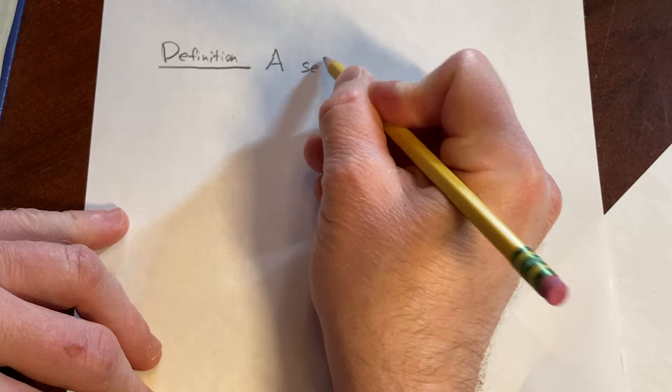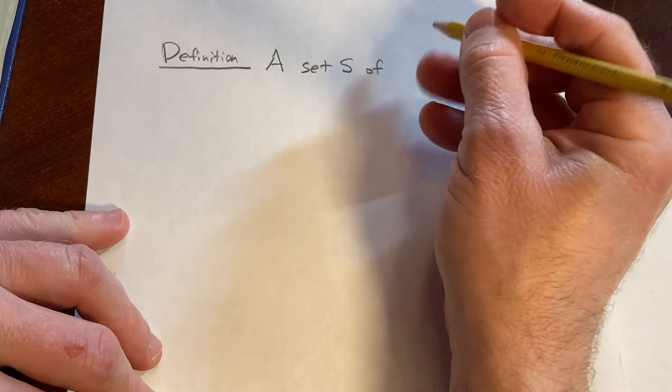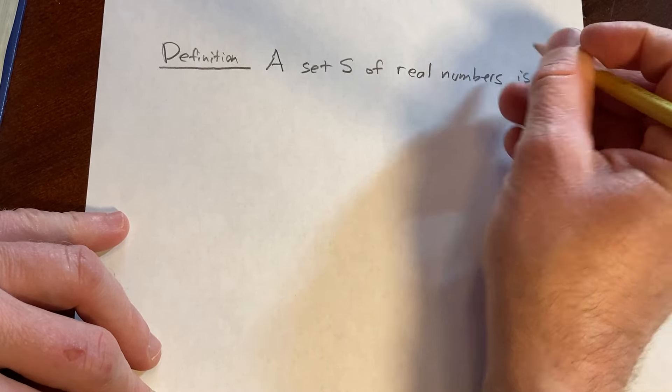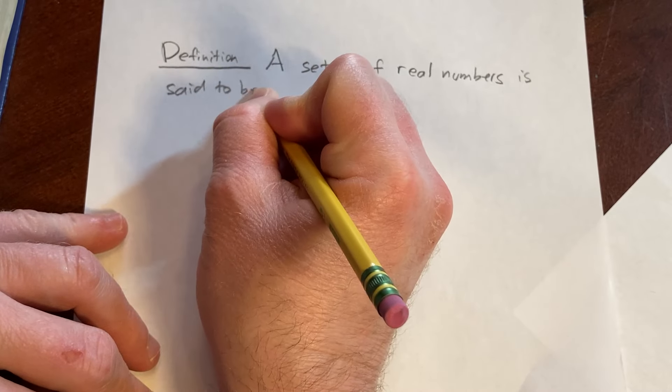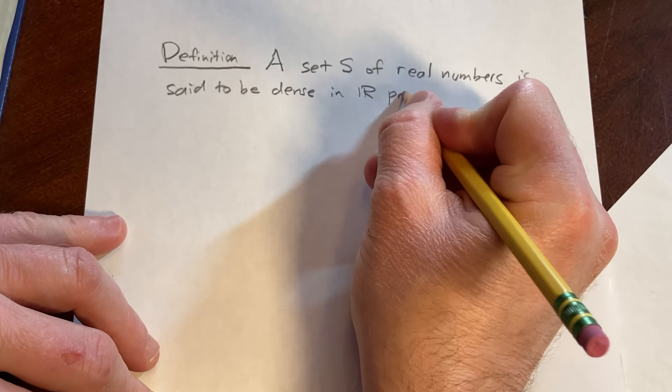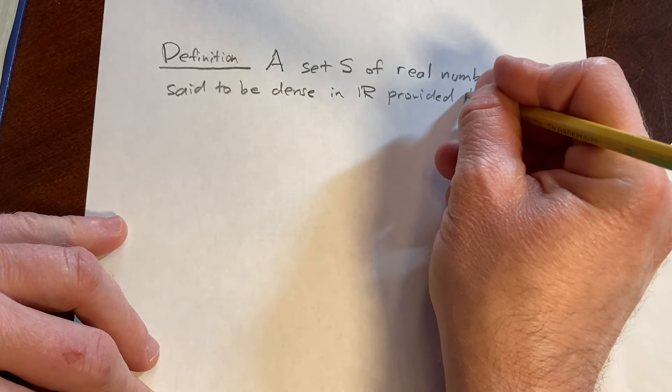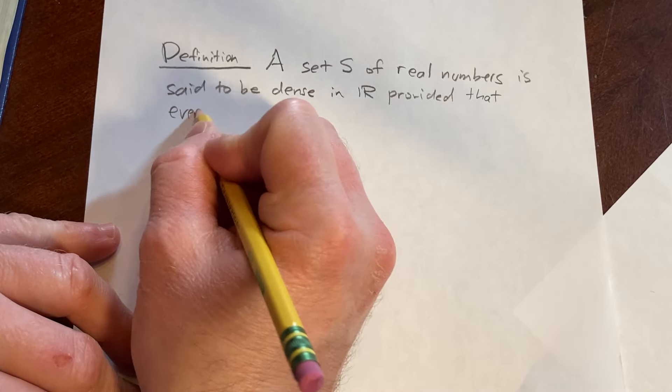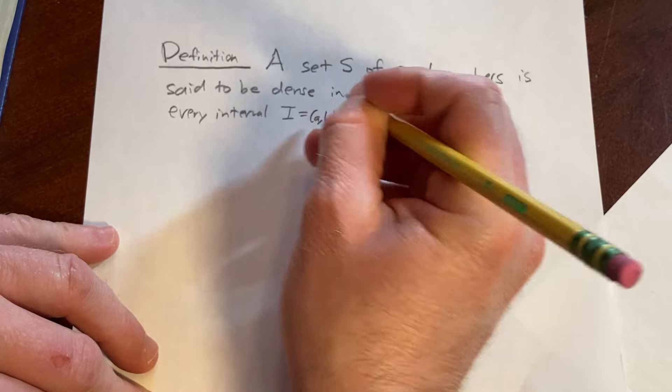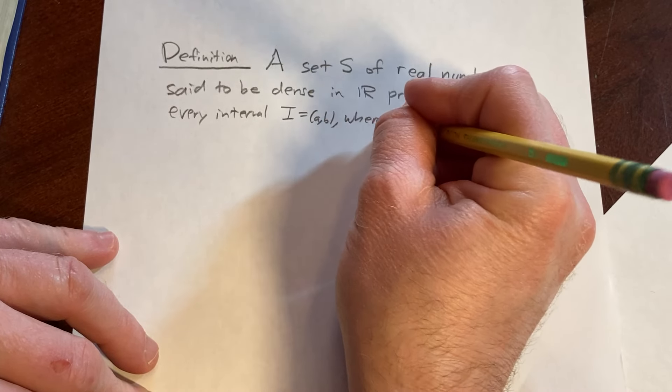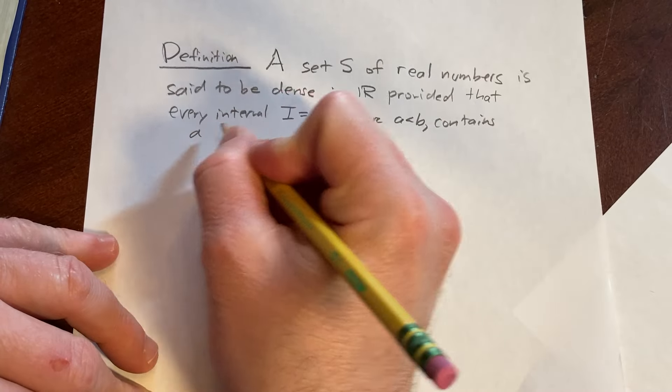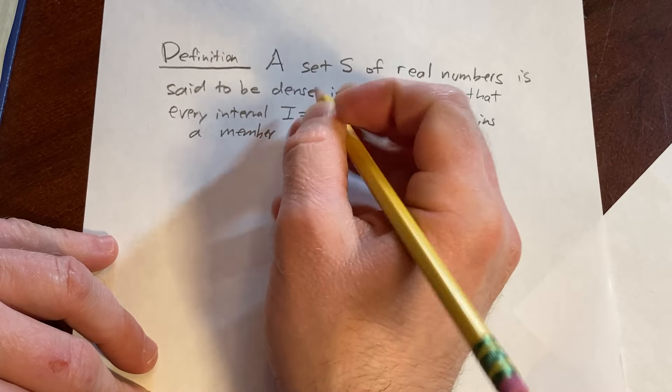A set S of real numbers is said to be dense in R, provided that every interval I equal to (a, b), where a is less than b, contains a member of S.